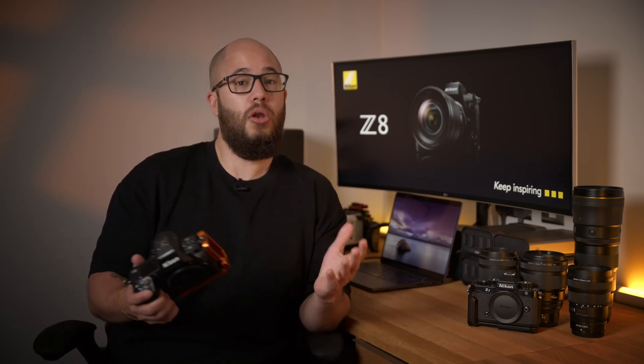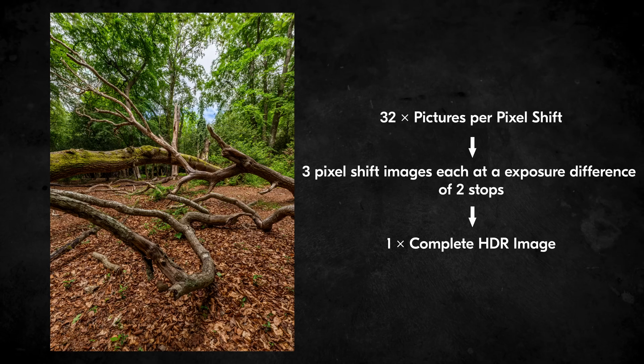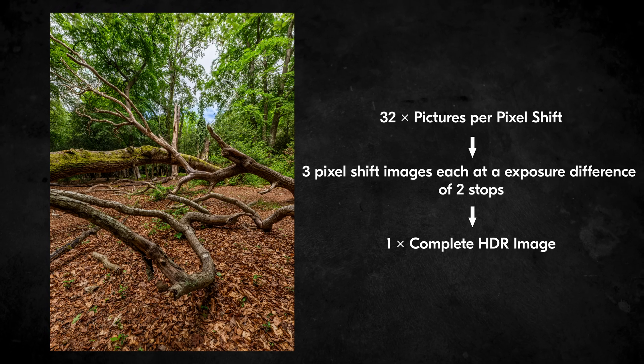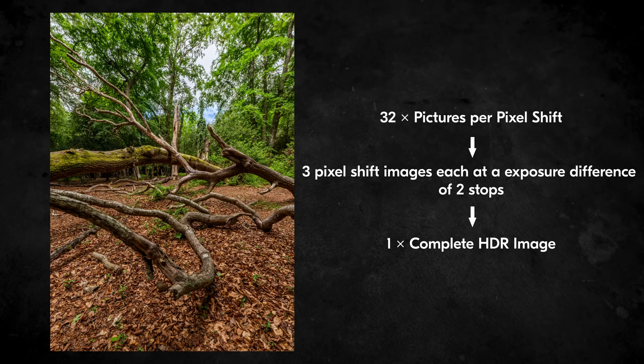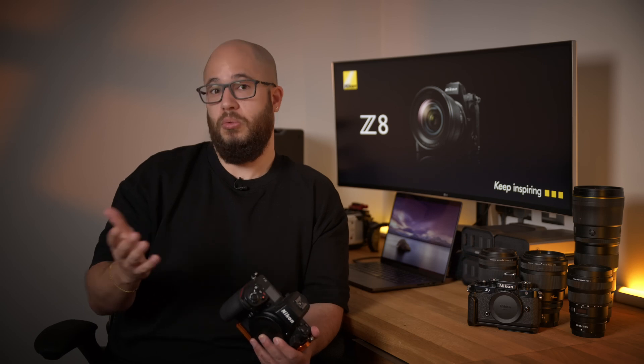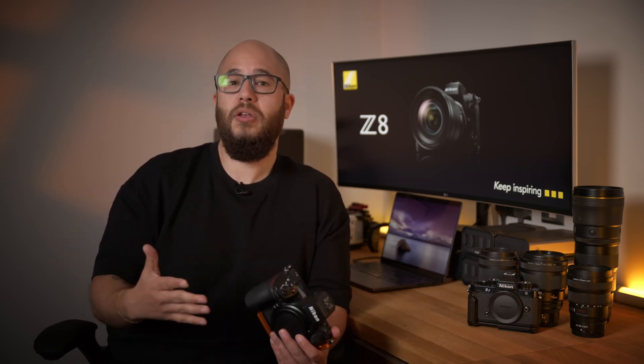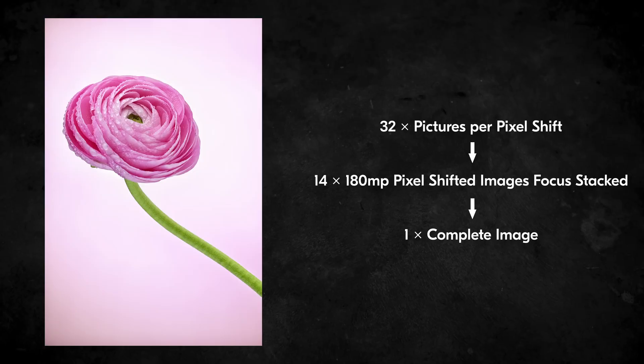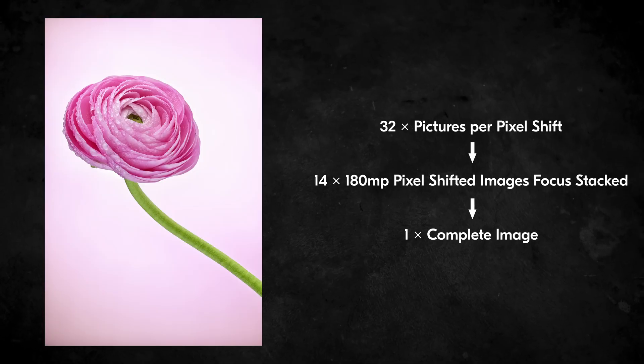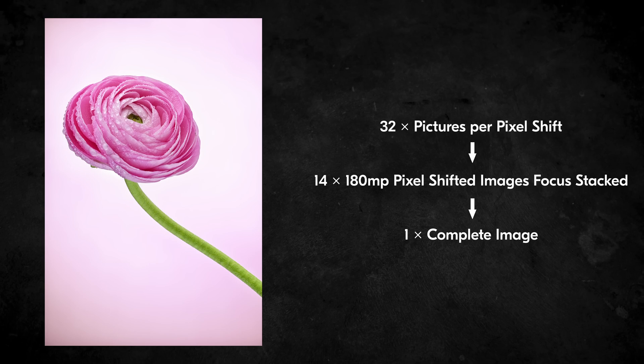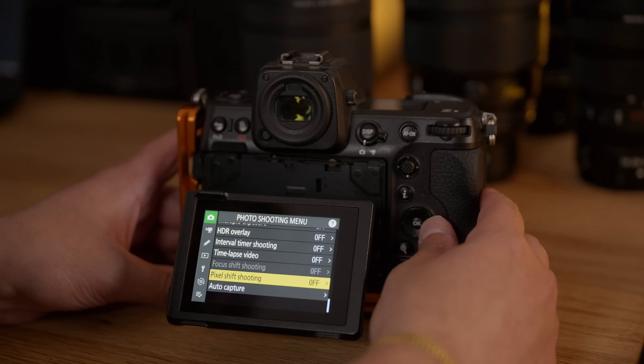Pixel Shift has had some new additions, meaning that you'll be able to use Pixel Shift alongside Auto Exposure Bracketing and Focus Shift Shooting. This means that you can shoot a Pixel Shift image with different exposures, covering the whole high dynamic range of the scene so you don't lose a highlight or a shadow. And when it comes to Focus Shift shooting, you can combine those images to create a fully focus-stacked Pixel Shift image, giving you higher resolution and sharpness from front to back. For those wanting to use Auto Exposure Bracketing with Pixel Shift, you'll access this in the Pixel Shift shooting menu.